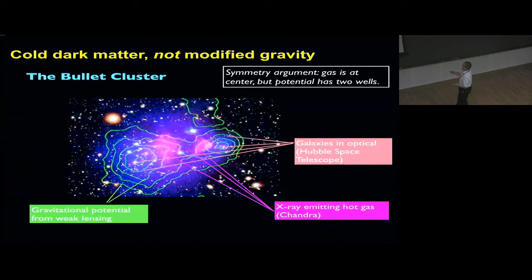If we have an alternative theory of gravity, we have gas at the center, but when we measure the gravitational potential through weak lensing, we find it has two potential wells. We would need a theory that has a central source but a dipole field. Most theories we write down respect spherical symmetry. This is really a symmetry argument that speaks in favor of the presence of cold dark matter in these clusters and not modifications of gravity.